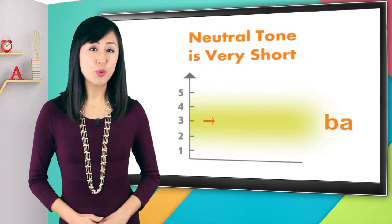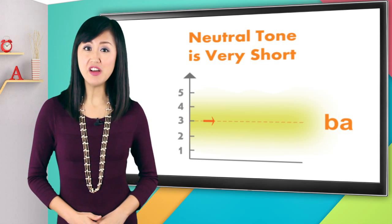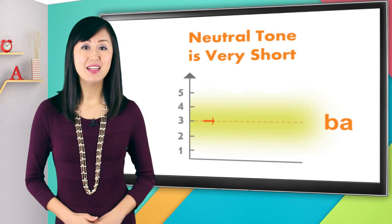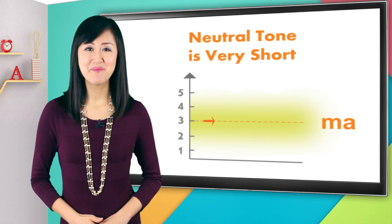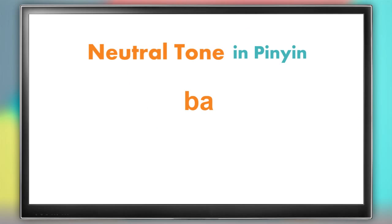Can you hear how it's super short and also in the middle of my voice range? 'Ba', 'na', 'ma'. When you see a syllable written in pinyin with no accent mark over the vowel, then you know it's got a neutral tone: 'ba', 'na', 'ma'.